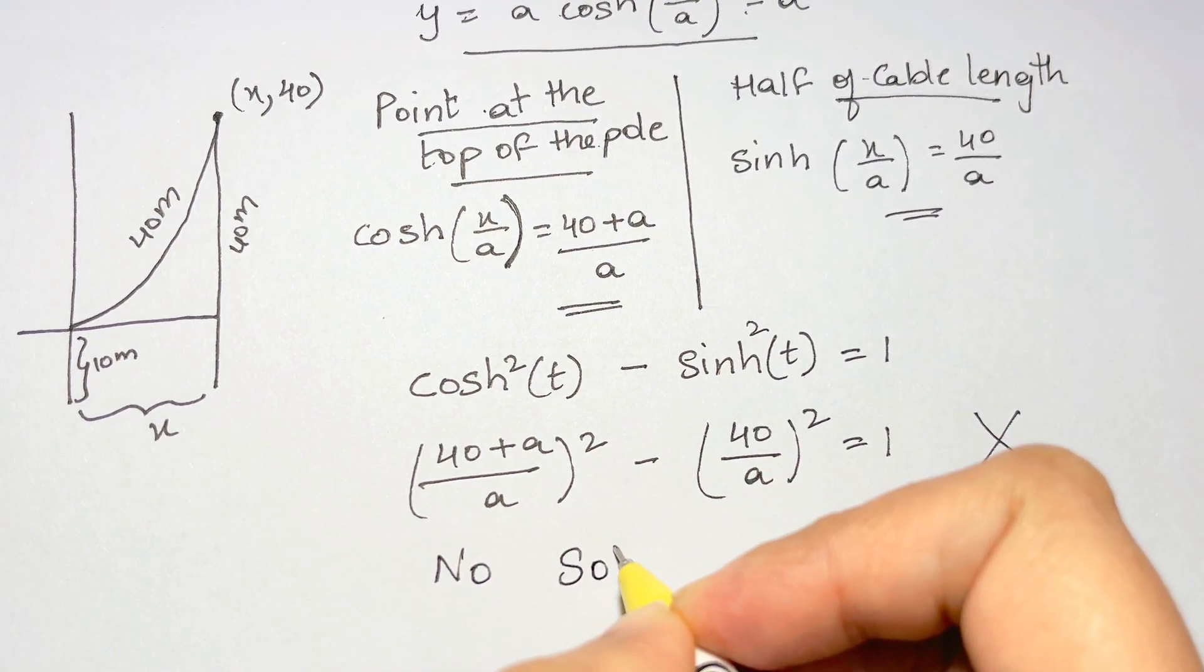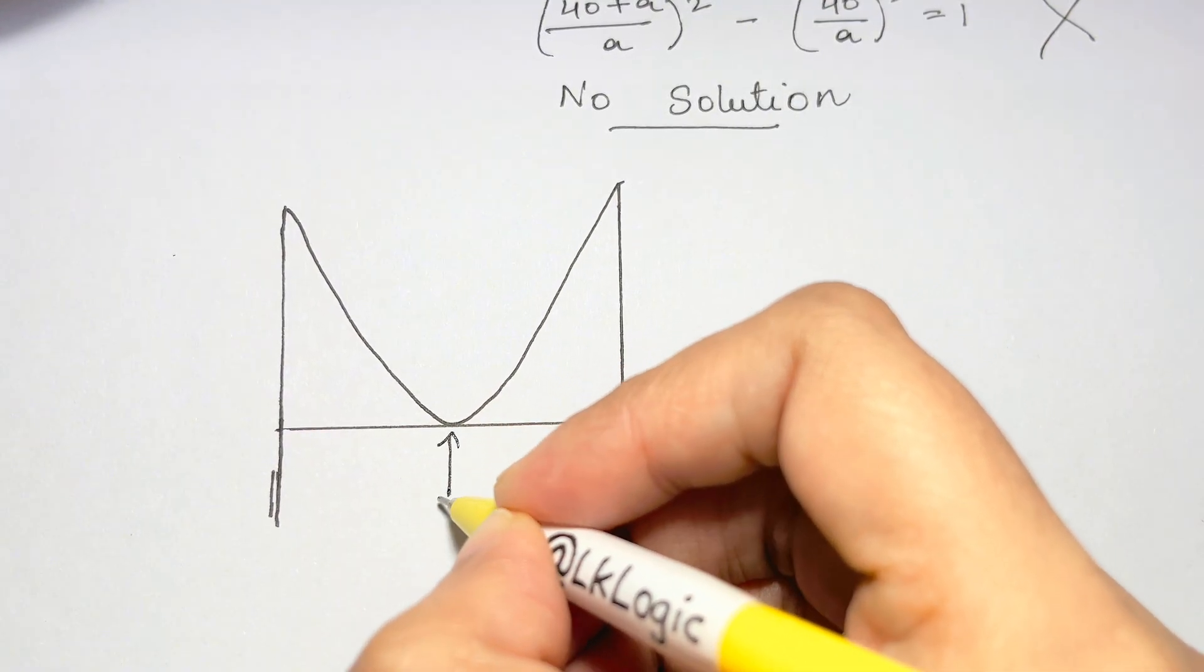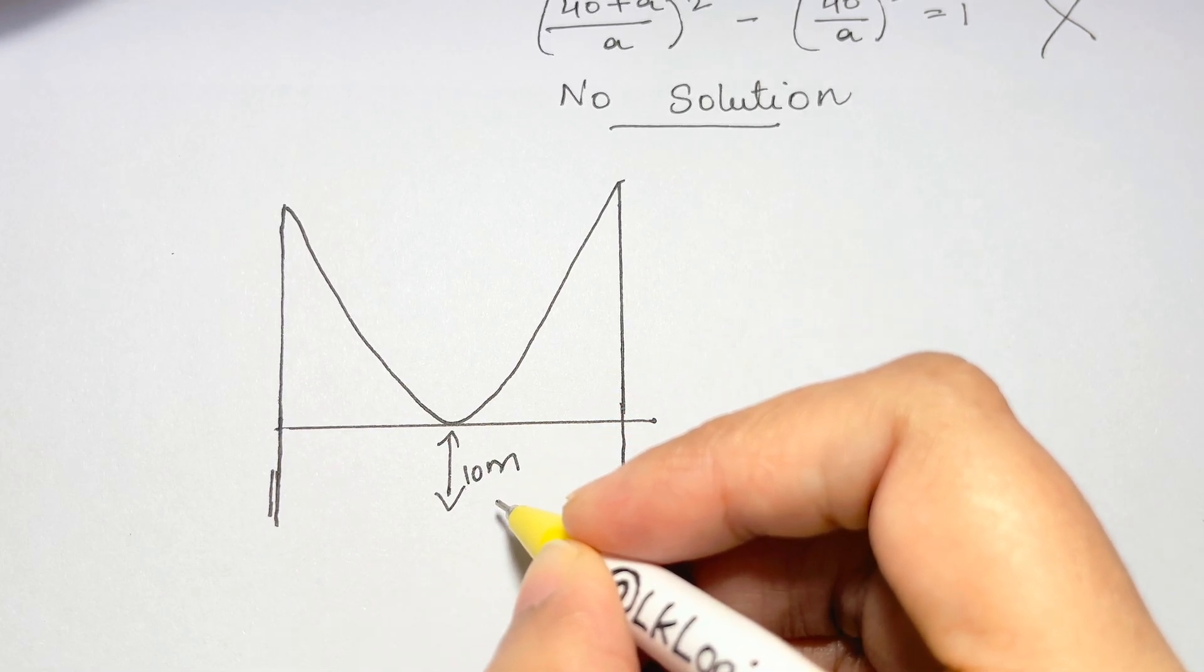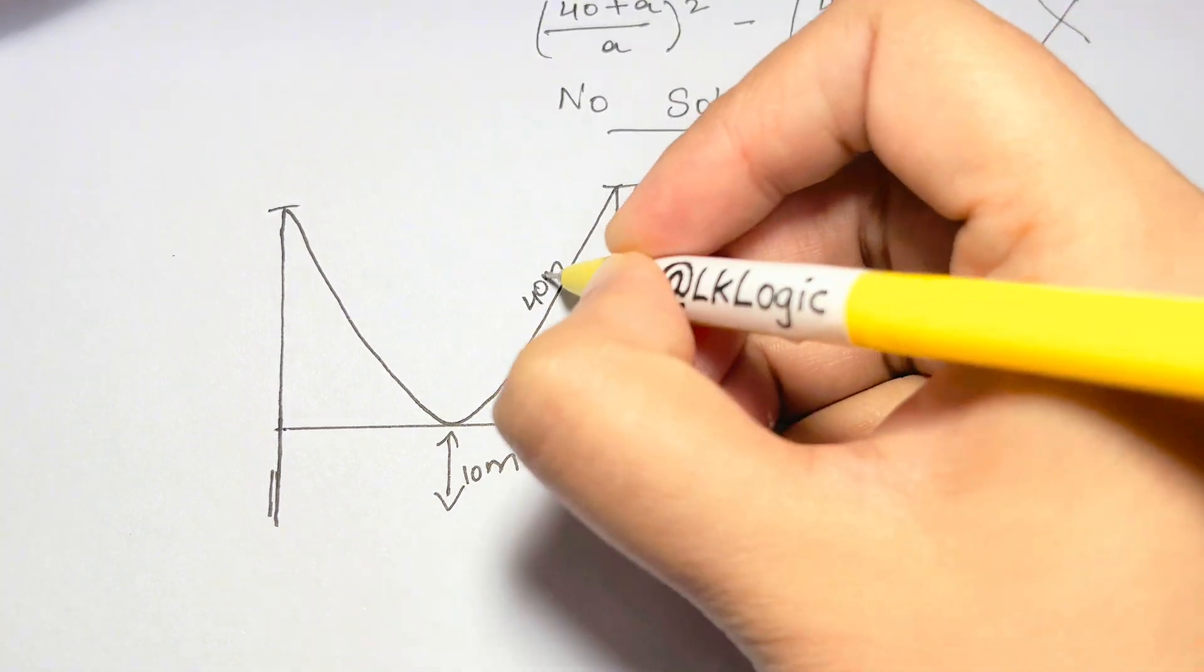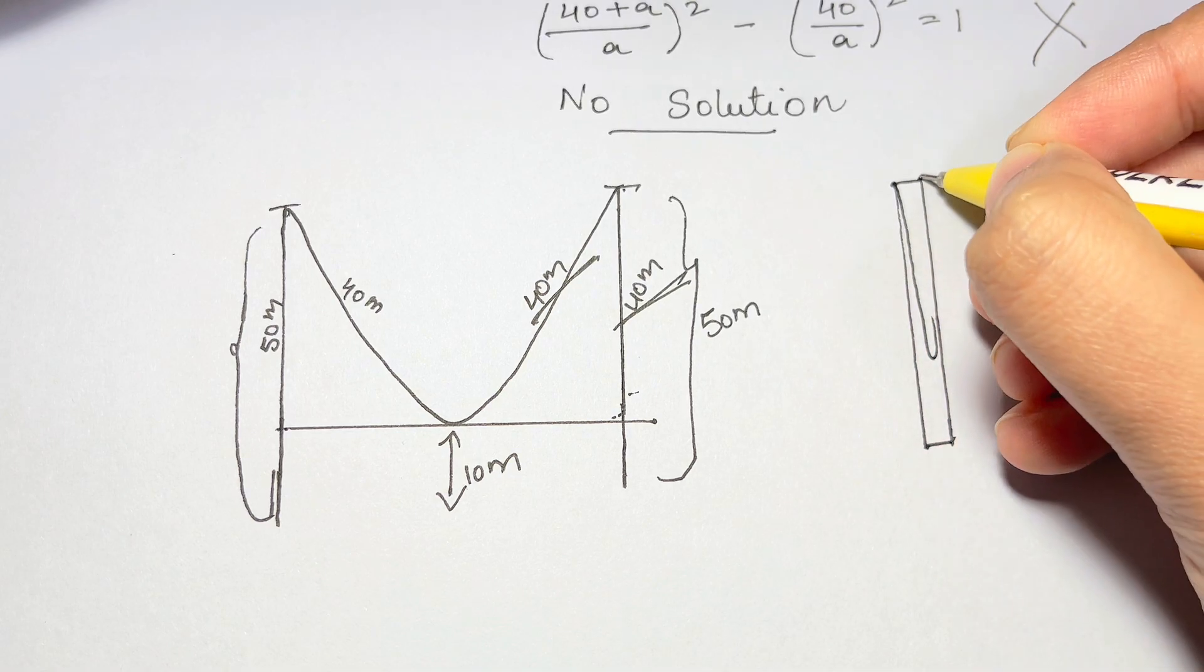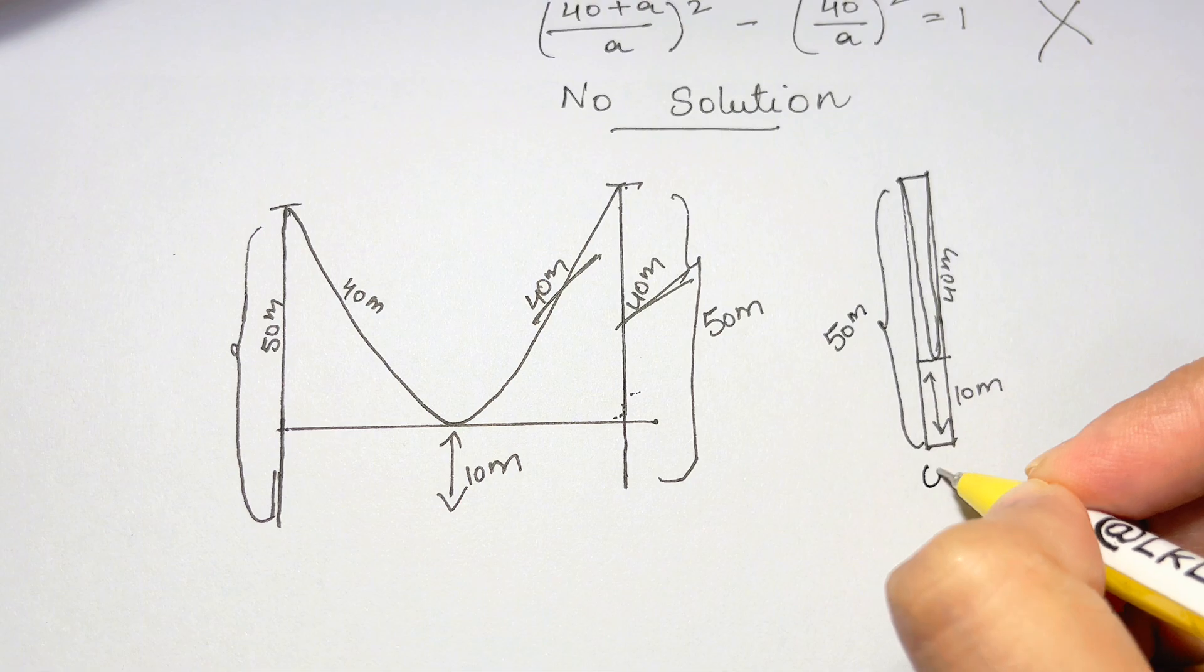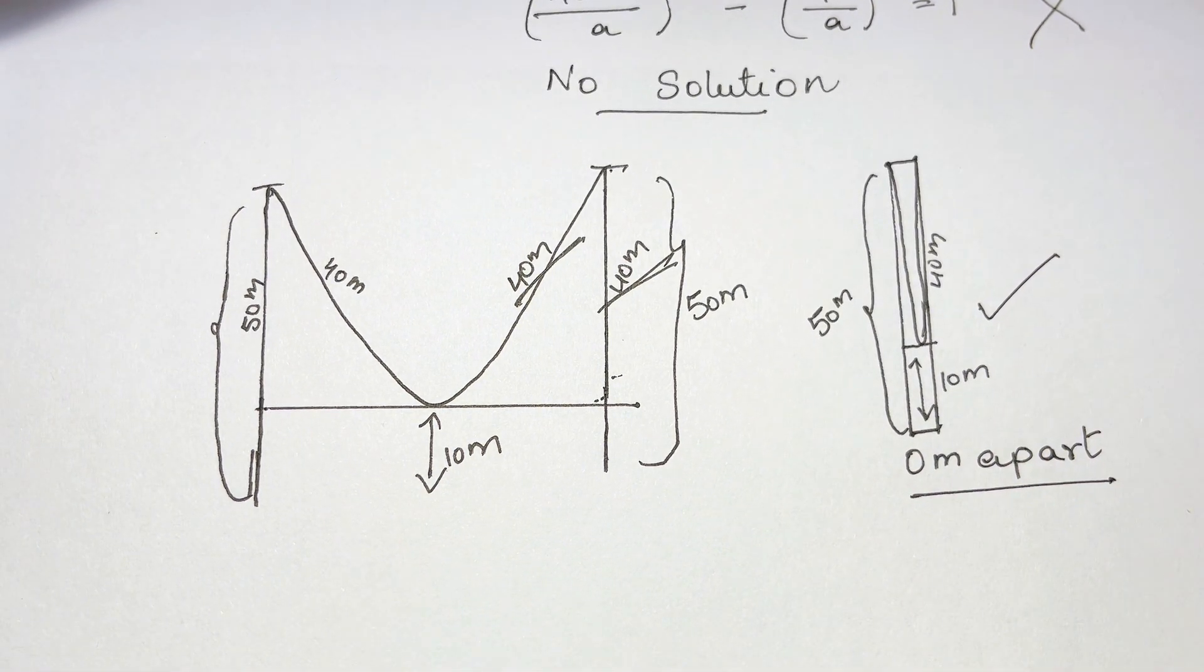So what's going on? Well we're going to need to think about the problem logically. The hanging cable is supposed to be 10 meters off the ground, which is 40 meters from the top of the pole, but half of the cable is already 40 meters. In other words, the cable must be folded exactly in half, and that means the two poles are coincident. They are zero meters apart.